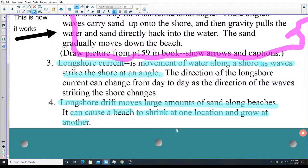Longshore drift moves large amounts of sand along the beach. It can actually cause a beach to shrink because it's moved the sand that was on that beach further down.